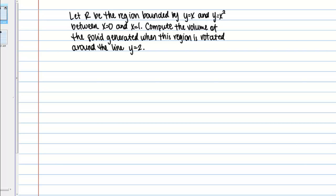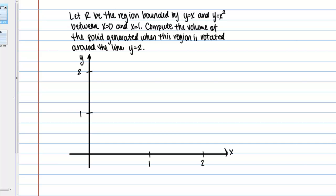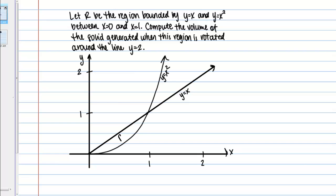I'm going to start by sketching a picture of my region and also this axis of rotation. First I have my line y equals x and then I also have the parabola y equals x squared. Here is my region R, and in this case I'm not rotating around one of the axes but around a different line — the line y equals 2. We're going to use the washer method, very similar to rotating around the x-axis, with some slight differences. Let me go ahead and write down a formula that we're going to use, and then we'll see why that formula makes sense.